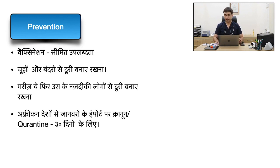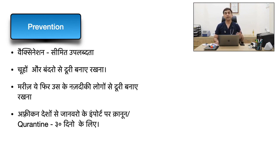This vaccine is not widely available to the general public. It is currently given to specific groups such as healthcare workers and laboratory workers. Other prevention strategies include avoiding contact with natural hosts such as monkeys, isolating suspected patients and their close contacts, and regulating the import of wild animals from endemic areas like Congo and other African countries, with a minimum quarantine period of 30 days observed for imported animals.